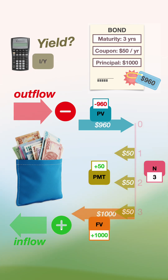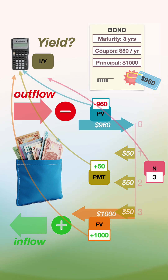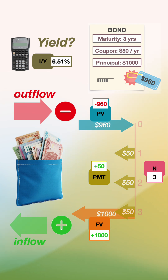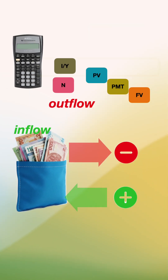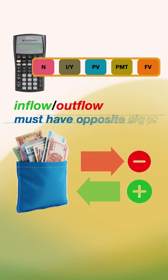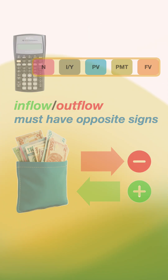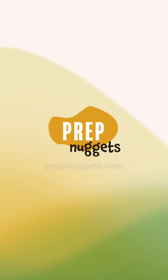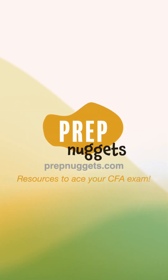Our unknown here is the yield, which is the I/Y parameter. Punch all the figures into your TVM calculator and solve for I/Y, and you should get 6.51%. The golden rule? Your inflows and outflows must have opposite signs. Follow PrepNuggets and go to PrepNuggets.com for more of these videos to ace your CFA exam.